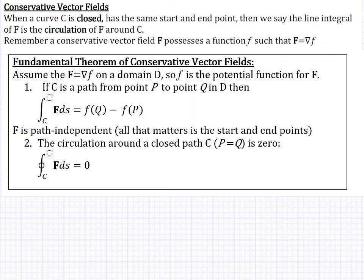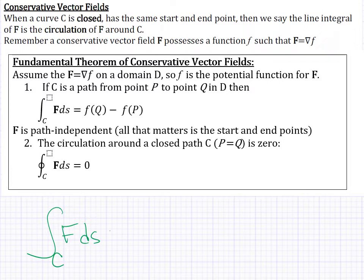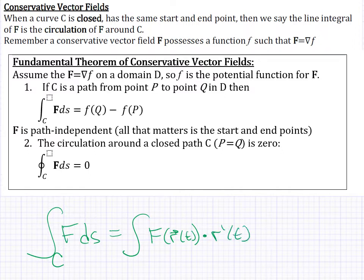The next thing we need to cover is the idea of conservative vector fields and integrating a conservative vector field over a curve. We've previously talked about how we can integrate any vector field over any curve, and we had a general formula: we could parametrize everything and use f(r(t)) · r'(t) dt from t = a to t = b.